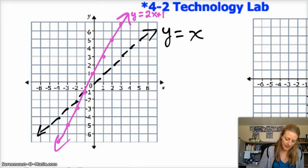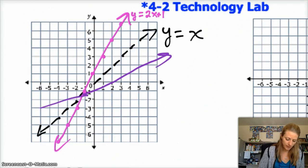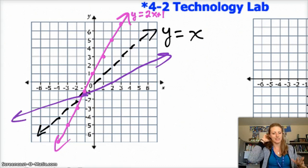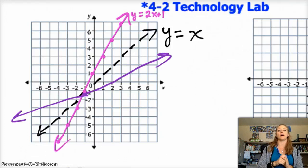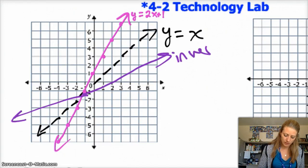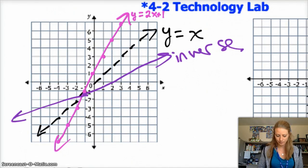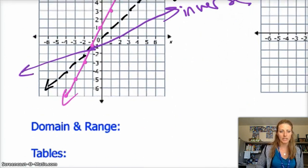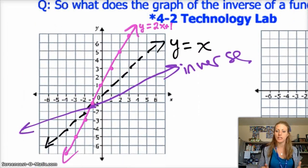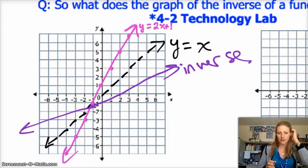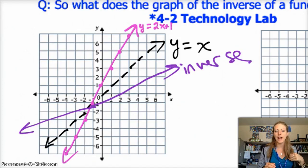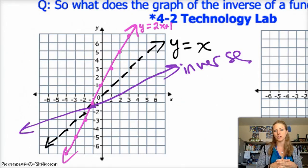And what you end up getting is something like the purple line. It's not perfect because I don't have a straight edge, but that's the idea. So this would be the inverse of the pink. So we're going to be talking about notation and graphing, but something I want you to think about is how do the points of the inverse relate to the points of the original function.